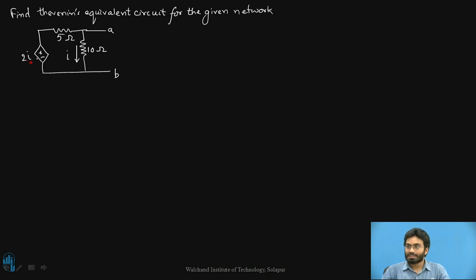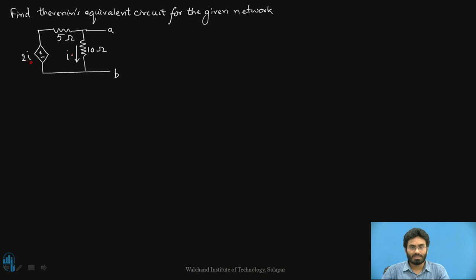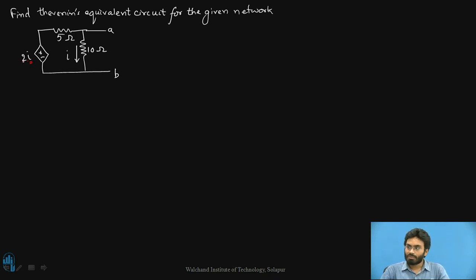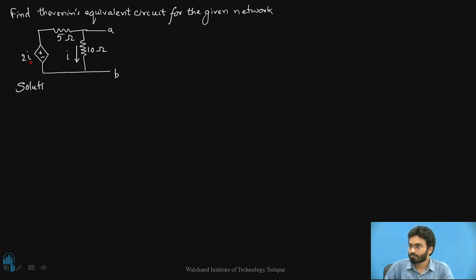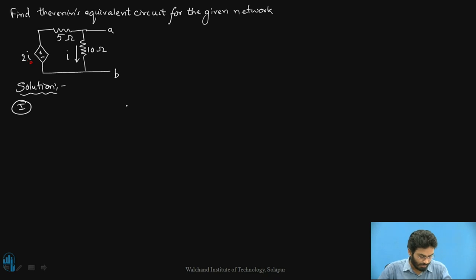The problem here is that this dependent source depends on a current I which is not present, because current I should actually be developed by some independent source for there to be a physical existence of this dependent source. Now let's look at what problems we would face in identifying the Thevenin's equivalent circuit for the given network. Step one is to calculate the Thevenin's resistance or Thevenin's voltage, whichever you consider more compatible.